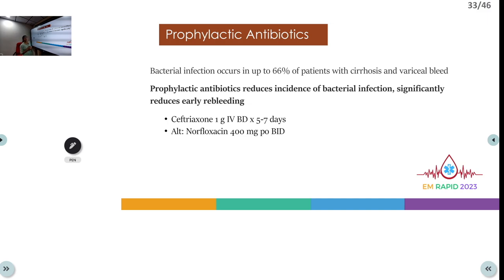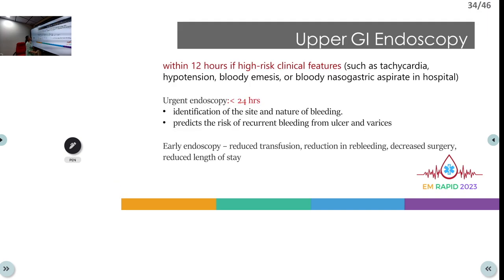Prophylactic antibiotics should be used since blood is a good bacterial growth medium. Ceftriaxone 1 gram IV BD for 5–7 days is the preferred agent; alternatives include fluoroquinolones such as norfloxacin 400 mg BD. Following medical management, upper GI endoscopy is performed to identify and treat the source of bleeding.